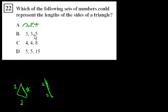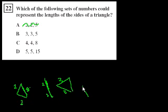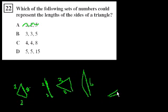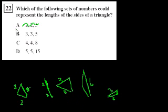Let's look at the other ones. 3, 3, 5 — there's no reason why that can't be a triangle. 3 and 3 is 6, so even if I flattened it out a lot, this side could be as long as 6. And I could squeeze them together so the third side could be something really small — anything between 0 and 6. Obviously it could be 5, so that's going to be the answer.